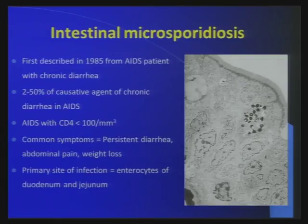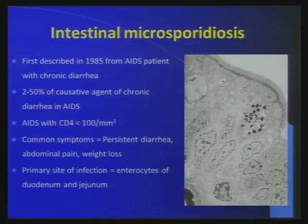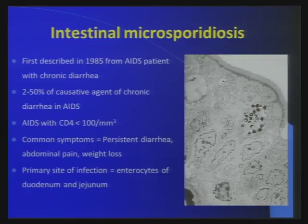Caused by which species? Enterocytozoon bieneusi. It just emerged before you were born — I feel it emerged around 1985. It usually occurs in a patient with very, very low CD4 count.